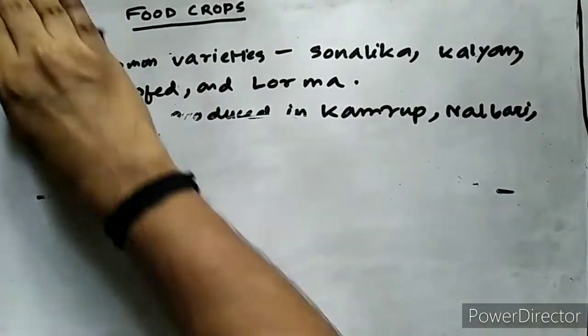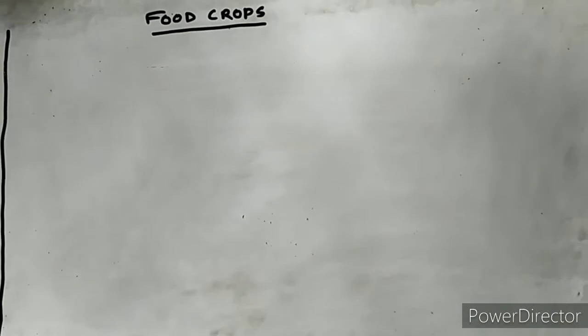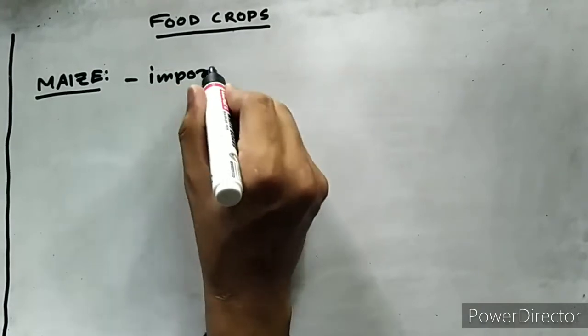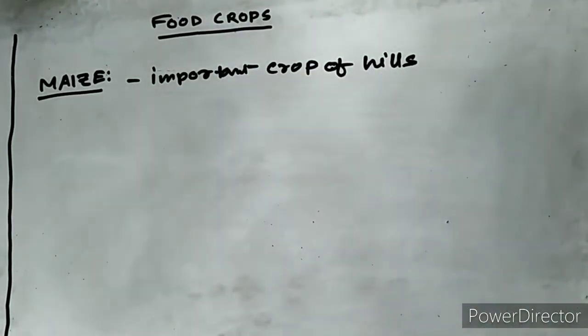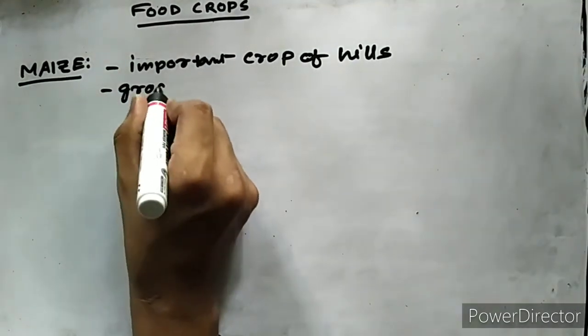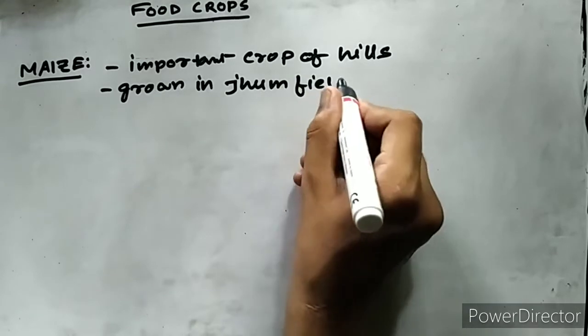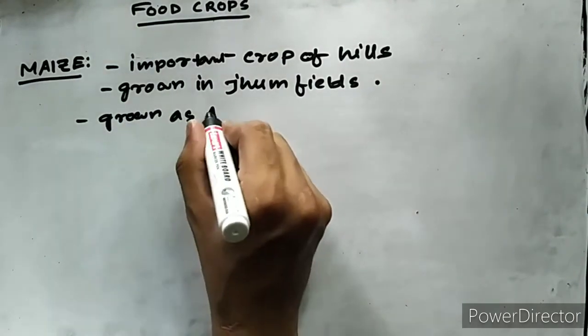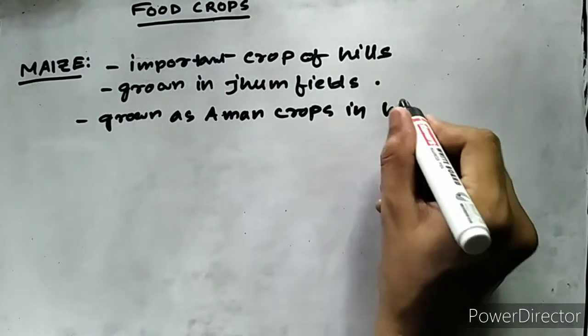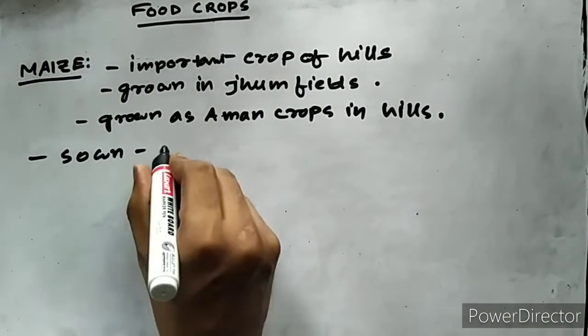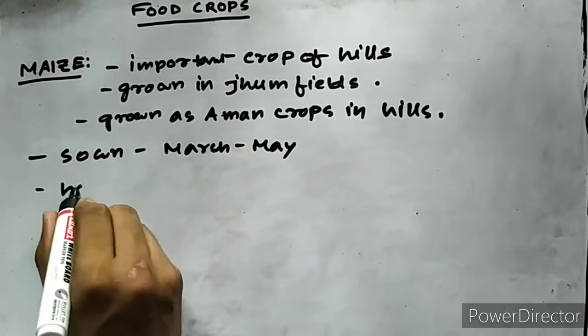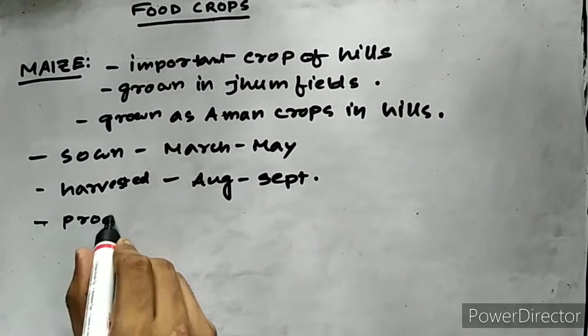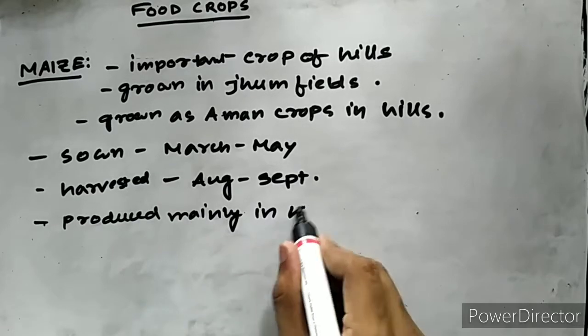The next important food crop grown in Assam is maize. A large quantity of maize is grown in the jhum fields on the hills. In the plains, only small patches of land are given to this crop in kitchen gardens. Maize is generally grown as an aman crop in Assam. The seeds are sown in March to May and harvested in August to September. It is mainly produced in the districts of Karbi Anglong and North Cachar Hills in the jhum fields.